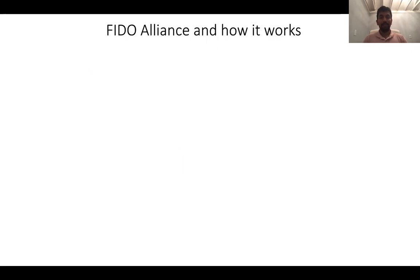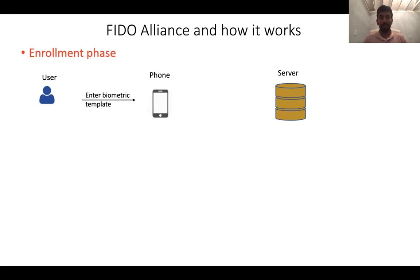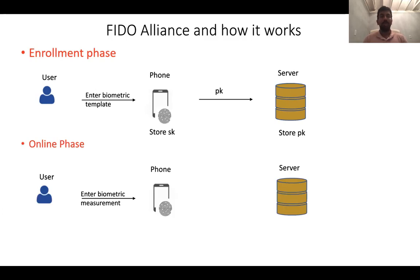One of the popular industry-wide standards for using Biometric Authentication is the FIDO Alliance. Let me briefly recall how that works. In the enrollment phase, the user enters the biometric template onto the phone. But instead of sending this biometric template onto the server, the phone locally stores the biometric template. It then generates a public key and a signing key, sends along the public key to the server, and keeps the signing key with itself. In the online phase, when a user wants to authenticate themselves, they once again enter the biometric measurement onto the phone. The phone locally performs the biometric comparison with the template stored earlier to check whether the new measurement matched or not. If it was a match, the signing key is unlocked. The server sends along a challenge and the phone signs this challenge to indicate to the server that the user produced a measurement that matched.